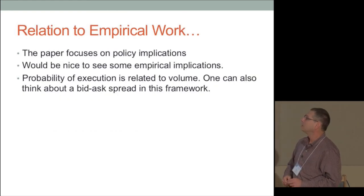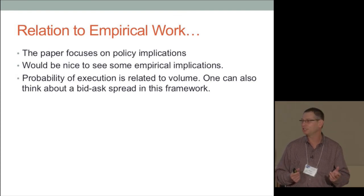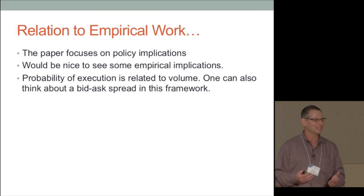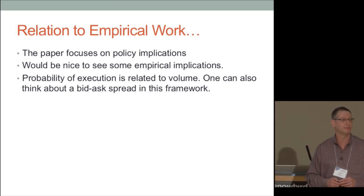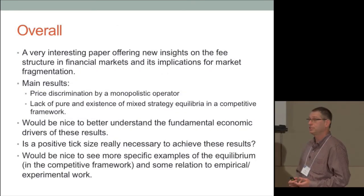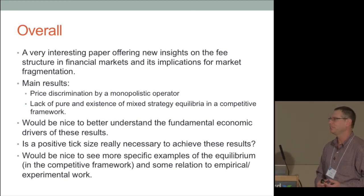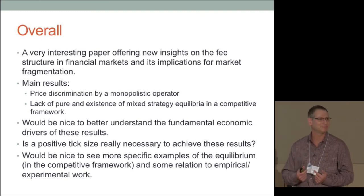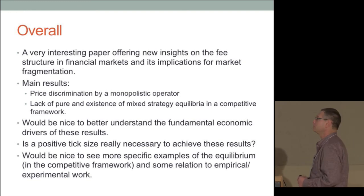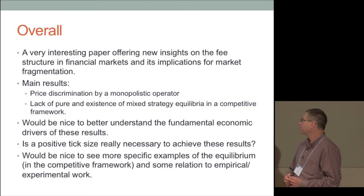I would also like to see more empirical predictions and positive implications, not just policy implications. To summarize: it's a very interesting paper offering new insights on make-take pricing and its relation to the tick size. However, I think the results are more general — you don't need some of the distributional assumptions or the tick size assumption, and in fact the neutrality result fails more generally than the paper suggests.